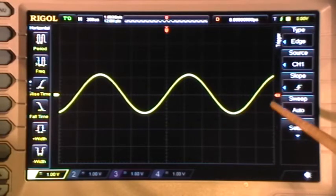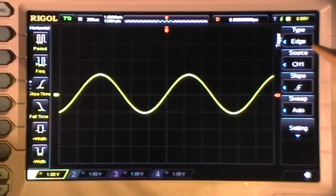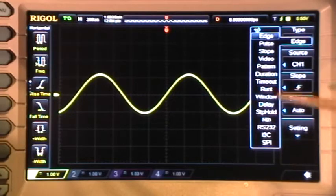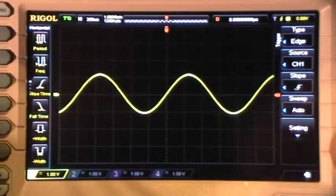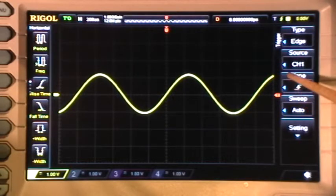The trigger type is set to edge and we have a whole lot of trigger options that are available to us here, but right now we're just concerned with using the edge trigger. Source channel 1, the slope here is rising, the little symbol means rising edge, and the sweep mode is auto. We're not going to worry about the deeper menus here.